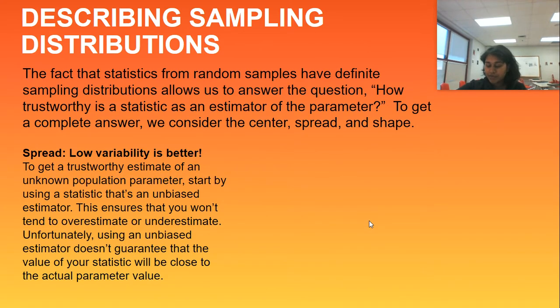Okay, spread. So we've talked about center. We're not going to talk about unusuals, but we are going to talk about our spread. Low variability is best. To get a trustworthy estimator of an unknown population parameter, start by using a statistic that is already an unbiased estimator. Median, already pretty unbiased. This ensures that you won't tend to overestimate or underestimate.